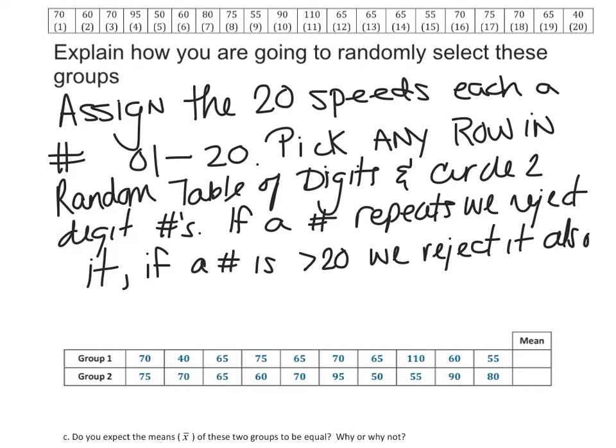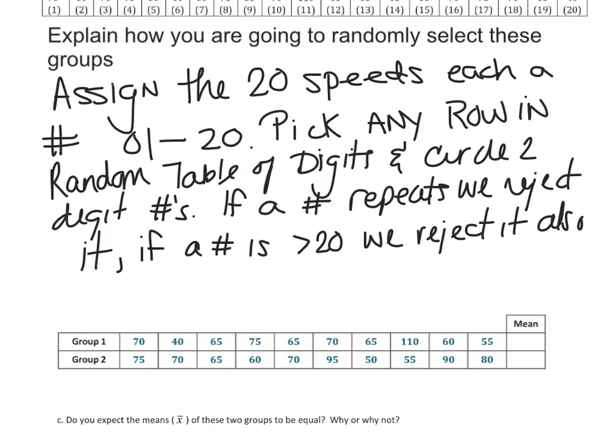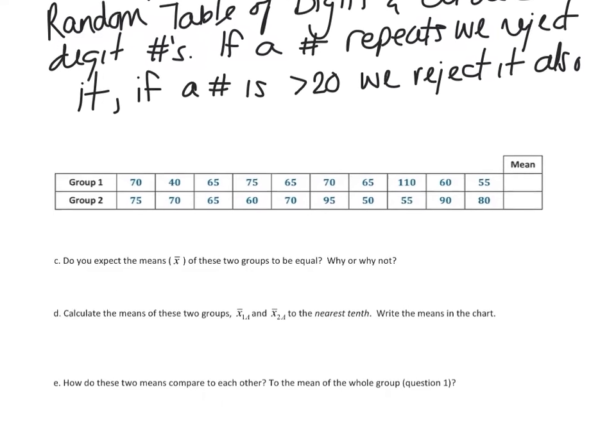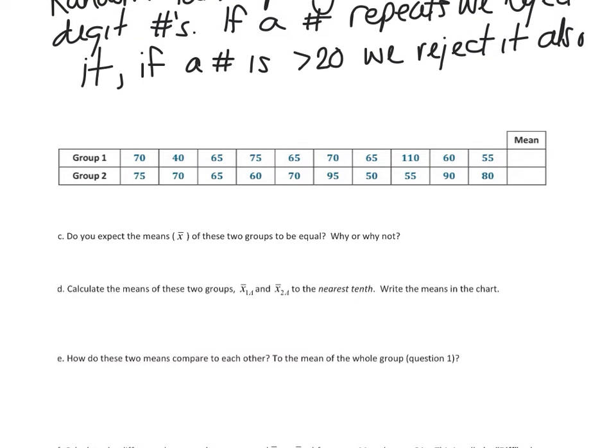So we're going to pretend that you did that, and here were the results that we got. So again, let's get this in our notebook pretty clear. So we randomly assigned them, we went to our random table of digits, we've got group one, we've got group two.